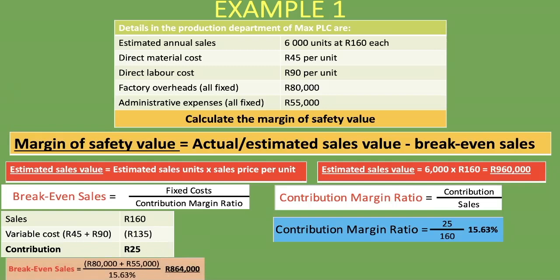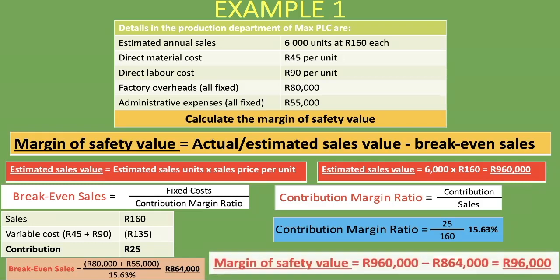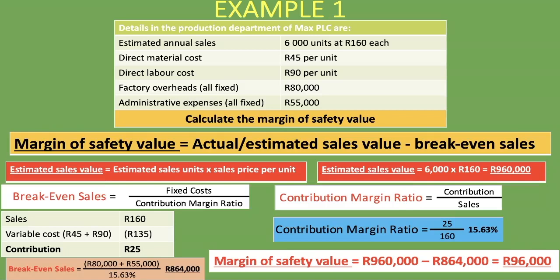Now that we have our break-even sales and our estimated sales value, we can calculate the margin of safety value. We take 960,000 rand for the estimated sales value minus 864,000 rand for the break-even sales, and it gives us an amount of 96,000 rand.